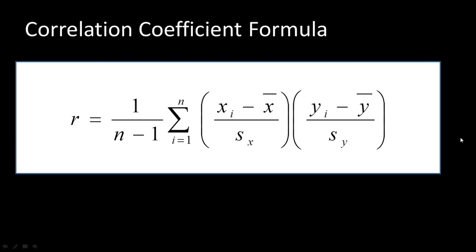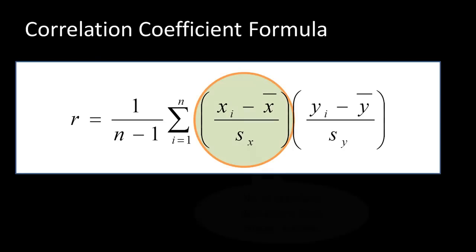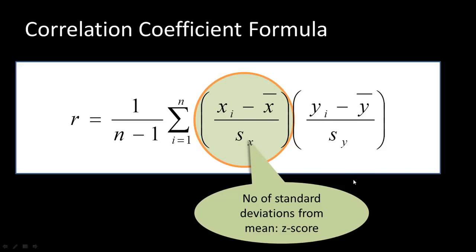The correlation coefficient can take values from minus 1 to plus 1. Minus 1 indicates high negative correlation — when x increases y decreases, and vice versa. A value close to plus 1 indicates that x and y move in the same direction. A correlation coefficient of 0 indicates no linear relationship. The standardized deviation used here is also referred to as the z-score.